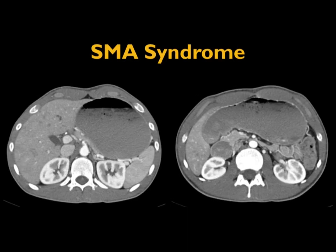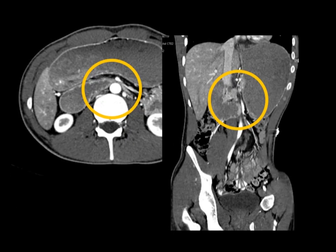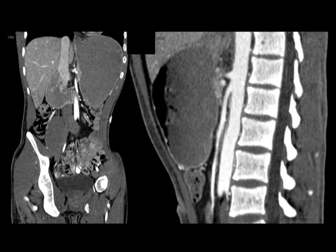An example: dilated stomach, dilated duodenum in an anorexic male patient. As the SMA comes across, the duodenum passes through the zone between the aorta and SMA — markedly narrowed and obstructed. On the coronal view, this is a classic example of SMA syndrome with obstruction. I should note: SMA angle narrowing can occur without symptoms. To call it SMA syndrome, you need to see duodenal obstruction. So if I see SMA angle narrowing on a scan, I'll comment on it, but unless the duodenum is dilated I won't call it SMA syndrome.